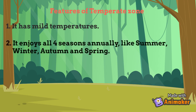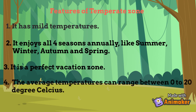The temperate zone enjoys all four seasons annually — summer, winter, autumn and spring. It is a perfect vacation zone. The average temperatures can range between 0 to 20 degrees Celsius.